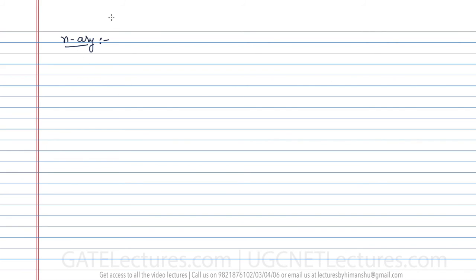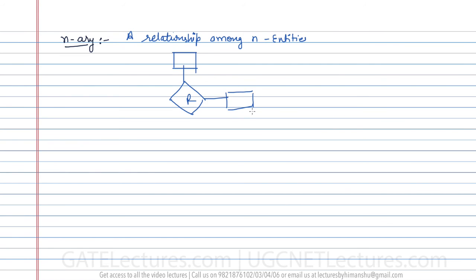Next is what is called the n-ary relationship. These are relationships among n entities. We can have entities e1, e2, e3, e4, e5, e6, and so on up to en. If there are n entities participating in a certain relationship, then that is called an n-ary relationship.